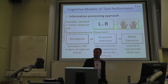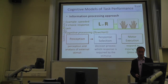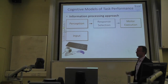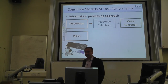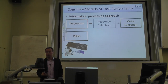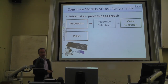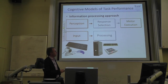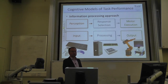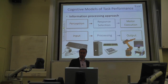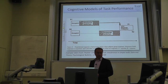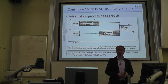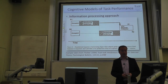We will need this demonstration to understand the cognitive processing of multitasking in a moment. In cognitive psychology, this is called the information processing approach. It arose with the rise of computers in the 1950s and 60s — perception is like computer input, response selection is like processing in the CPU and RAM, and motor execution is like the output, such as controlling a robot arm or displaying something on screen.